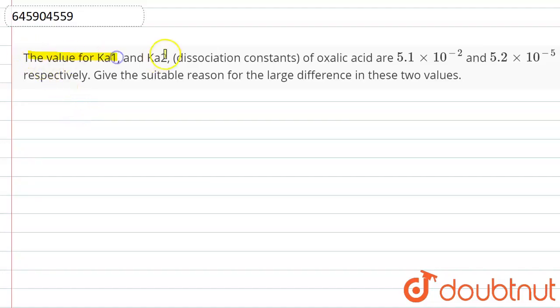Hello students, so the question is: the value of Ka1 and Ka2, dissociation constants of oxalic acid, are given as 5.1 × 10^-2 and 5.2 × 10^-5 respectively. Give a suitable reason for the large difference in these two values.